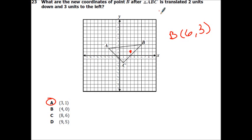Also remember, you could have just gone, so it says six, three is our original coordinates. If I'm going two units down, that means I'm going minus two over here. And then three units left, that means I'm going minus three here. So that would be a three, comma, one, just like we said.